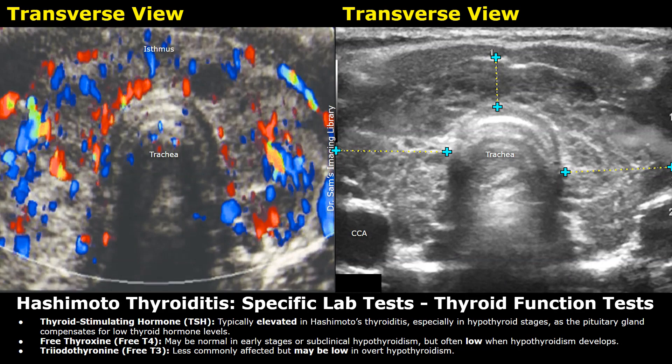Hashimoto thyroiditis, which is also known as chronic lymphocytic thyroiditis, is a common cause of hypothyroidism. Specific lab tests are useful in diagnosing Hashimoto thyroiditis — the lab test findings and ultrasound findings are used together in diagnosis. The first test is thyroid stimulating hormone (TSH), which is elevated in Hashimoto's thyroiditis.